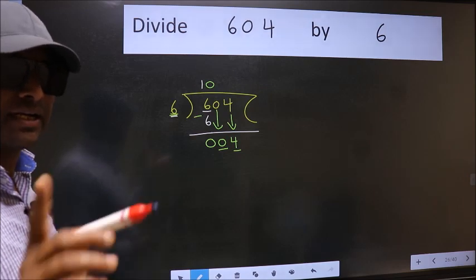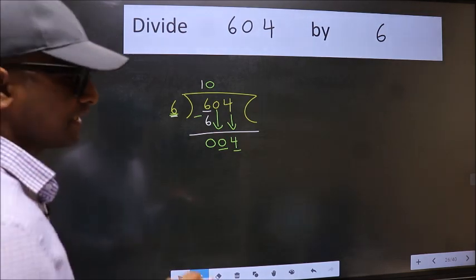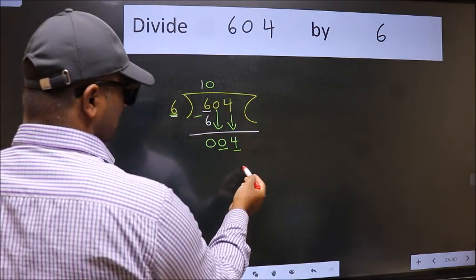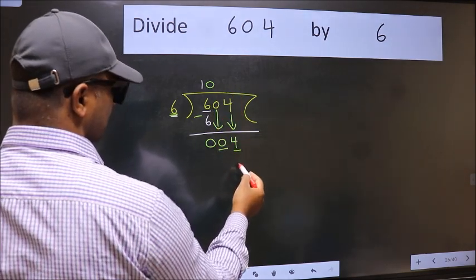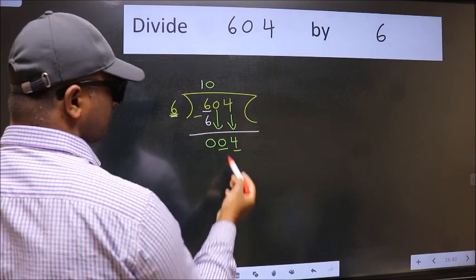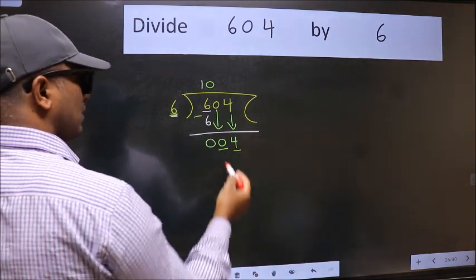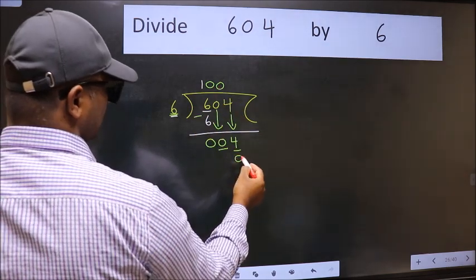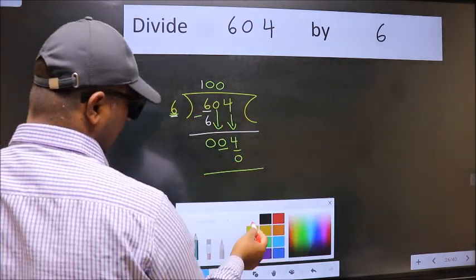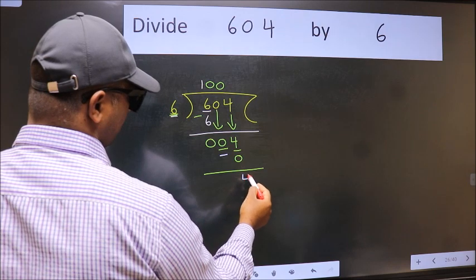Instead of that, what you should think of doing is which number should we take here? If I take 1, we will get 6. But 6 is larger than 4. So what we do is we take 0. So 6 into 0, 0. Now we subtract. We get 4.